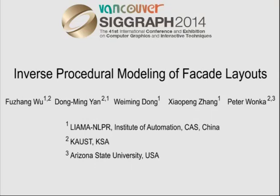How can we generate a shape grammar that encodes a given facade layout? In this paper, we tackle this problem by introducing an approximate dynamic programming framework.